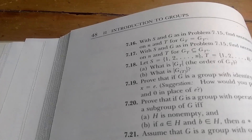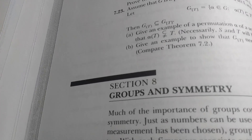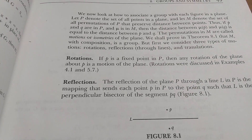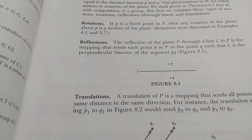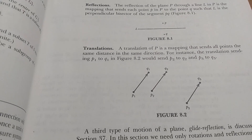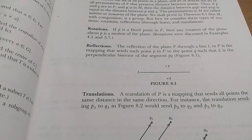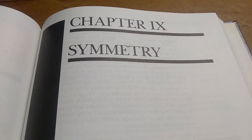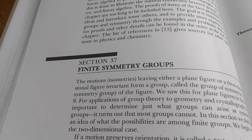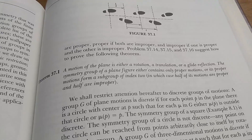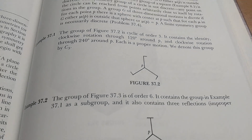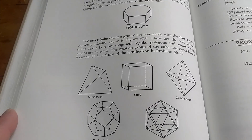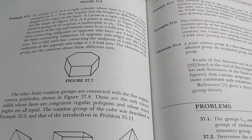Durbin talks about symmetry quite early on — this is page 48 of the book. He's discussing groups and symmetry, jumping into it early, covering rotations, reflections, and translations. That's mainly what I have used this book for, because it does have a lot on symmetry groups. Chapter 9 is entirely devoted to symmetry. He covers finite symmetry groups and goes from there. As you can see from the pictures, he gives lots of illustrations, which is really important when trying to understand symmetry groups. This makes it a really good book to learn about this type of material, which is not found in many other books.